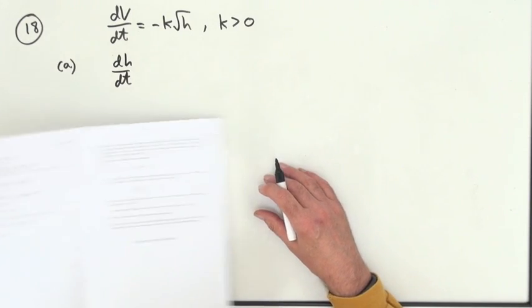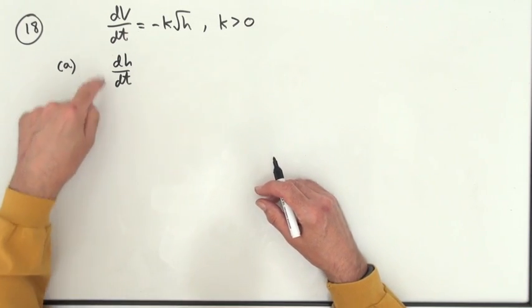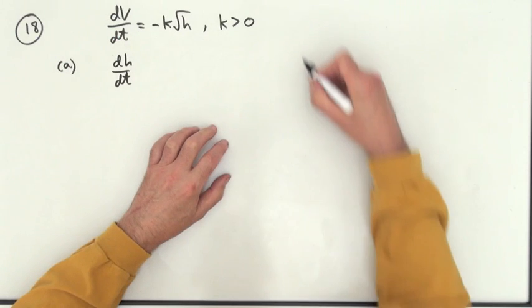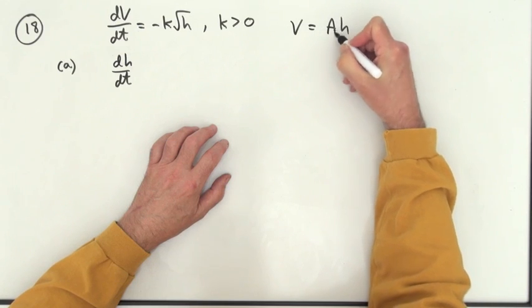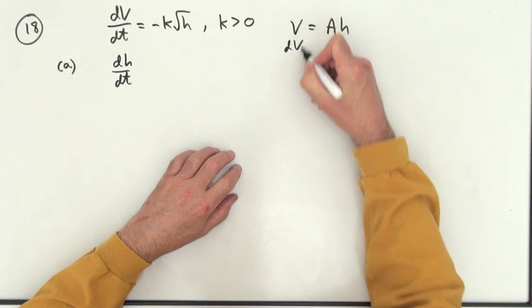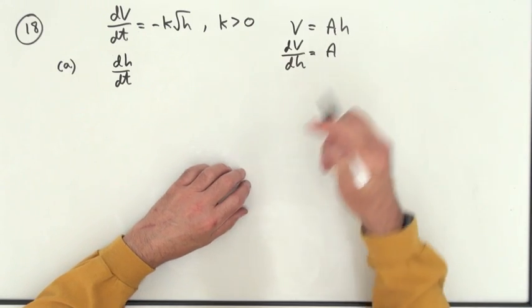Now, we don't have a formula that connects H and T. But we do have one for a cylinder that connects V and H. So we have V equals AH. Well, in fact, that belongs to any prism, area base times height. So dV by dH would be A.